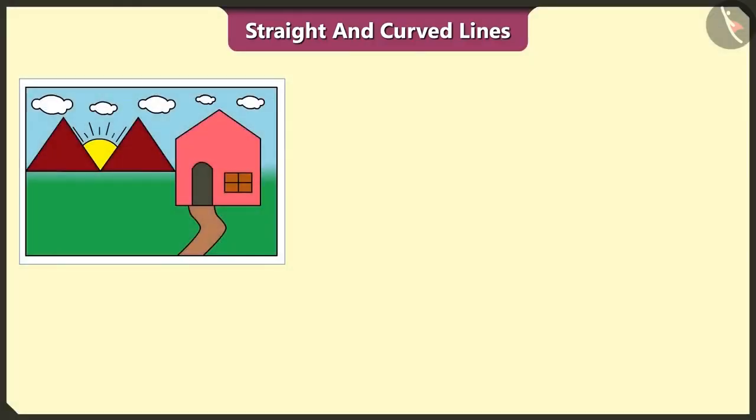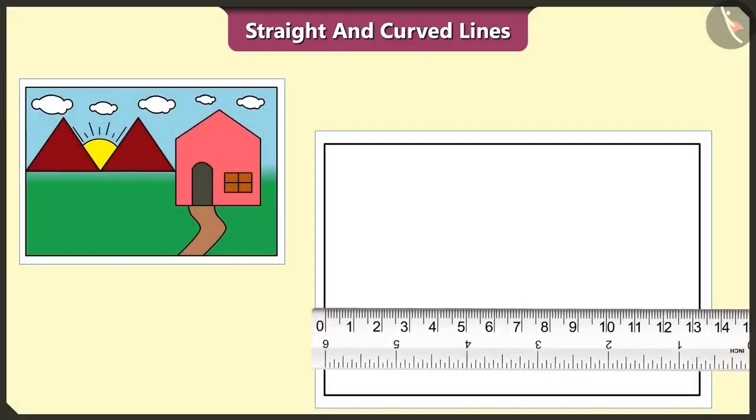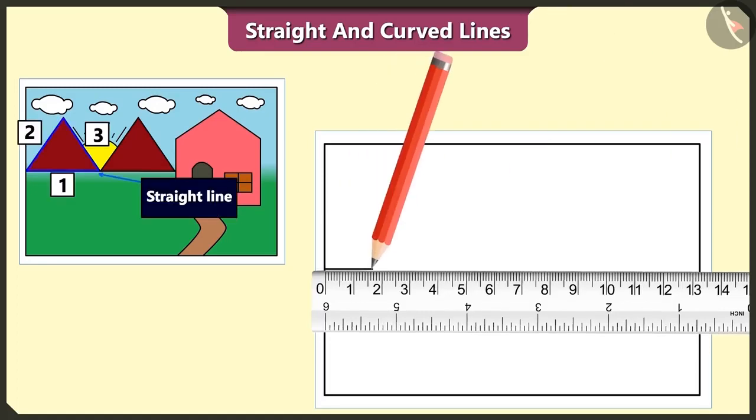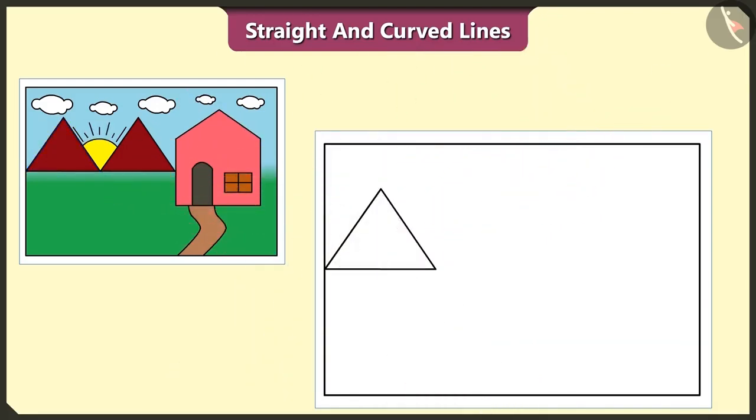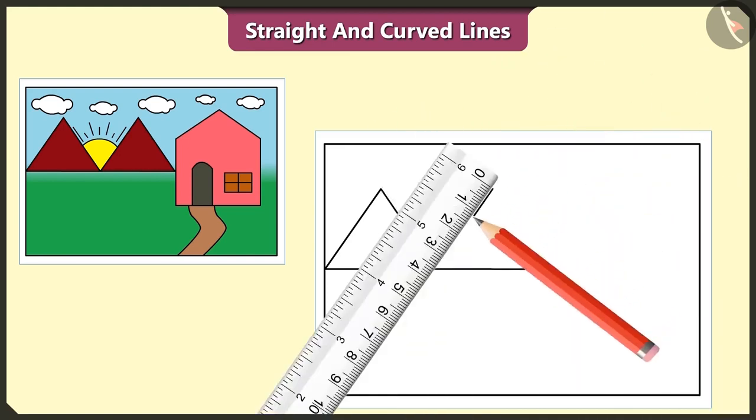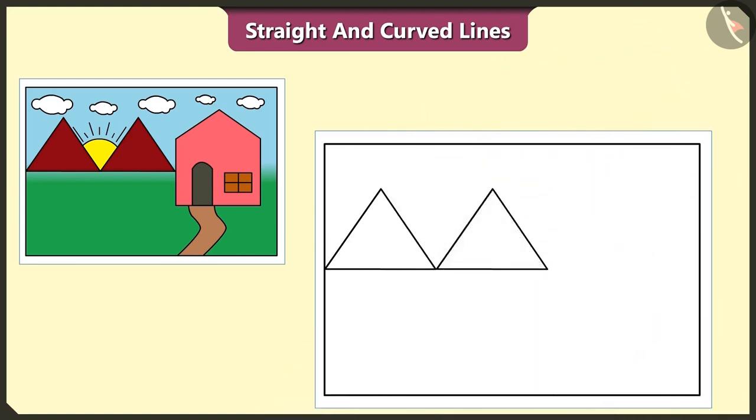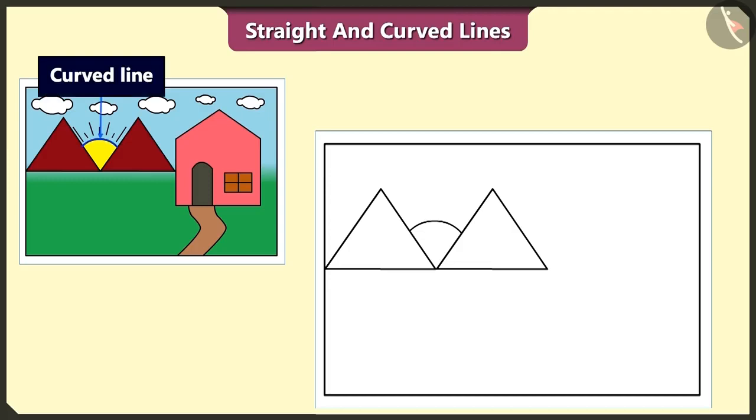First of all, let's draw a hill with the help of scale on paper. This hill is made of three straight lines. And I made a similar hill beside it like this. Oh wow, let's draw one sun like this with the curved lines between these two hills made up of straight lines.